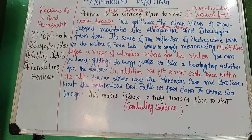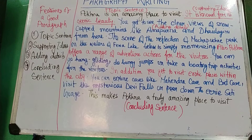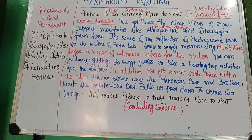For the first supporting idea — child labor deprives children of their childhood — you can add details: they cannot go to school, they cannot study, they are forced to work in houses, and they are not allowed to play. For the second supporting idea — children are being tortured — you can write about the various forms of torture inflicted on children as adding details.